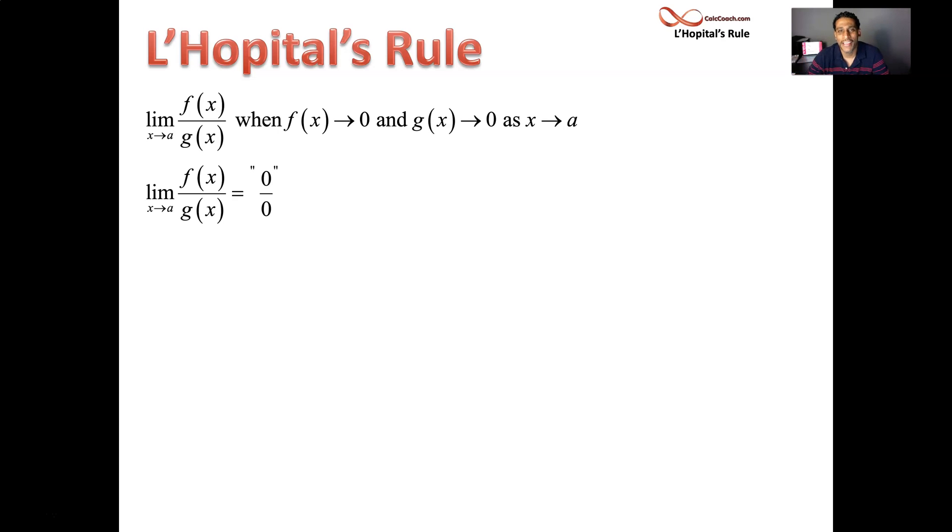Someone once told you 0 divided by anything should be 0. But then someone once told you you're not allowed to divide by 0. Then someone once told you if you divide something by itself, it's a 1. So it's indeterminate. L'Hôpital's Rule comes in to help you perhaps find the value of this limit.